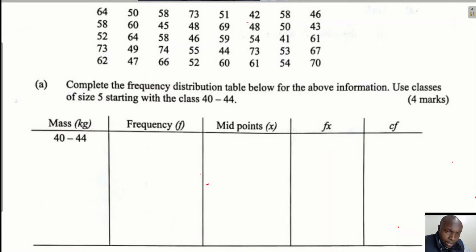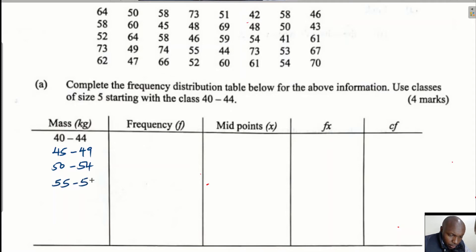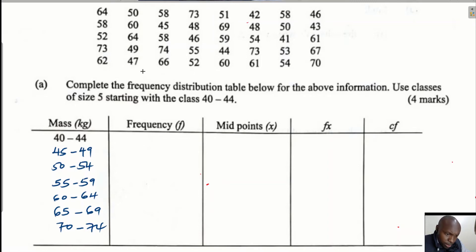The first thing I like to check is the highest mass. When I do a cross-check, the highest value is 74. So I'll create the classes with size 5: 40–44, 45–49, 50–54, 55–59, 60–64, 65–69, and 70–74, since the highest value seems to be 74.